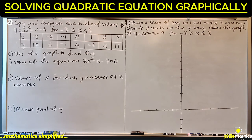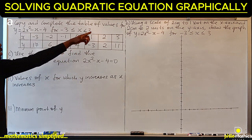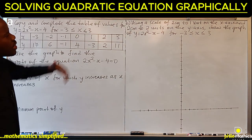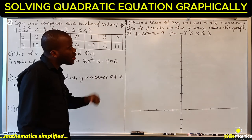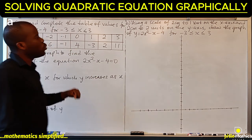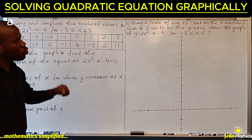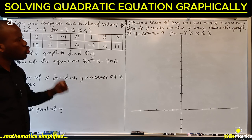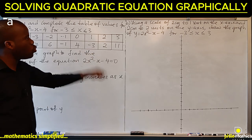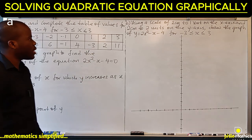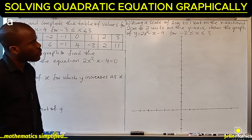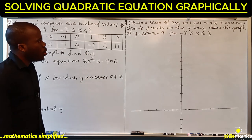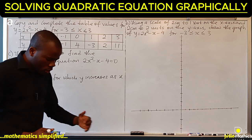The second question says: using a scale of 2cm to 1 unit on the x-axis and 2cm to 2 units on the y-axis, draw the graph of y equals 2x squared minus x minus 4 for the range of values of x from minus 3 to 3. When we say a scale of 2cm to 1 unit, what do we mean?